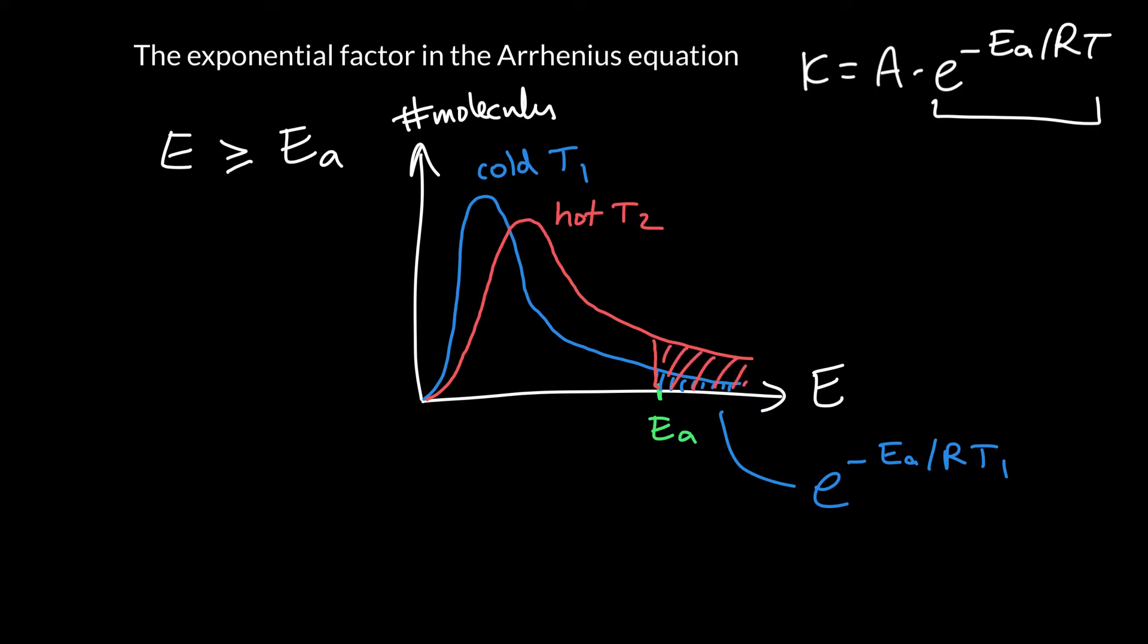And out here on the tail, we can see we've got maybe double the number of molecules that can react now. If this was, say, a 10 degree increase, that would seem about right. So this fraction here is essentially e to the minus Ea over RT2.